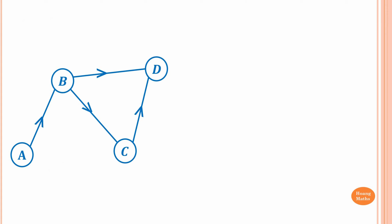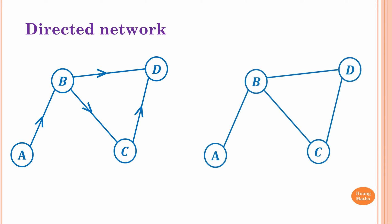Looking at this next example with towns A, B, C, and D: you can only go from A to B, from B you can go to D or C, and from C you can only go to D. This is called a directed network because it has direction. The previous example without directions is called an undirected network.